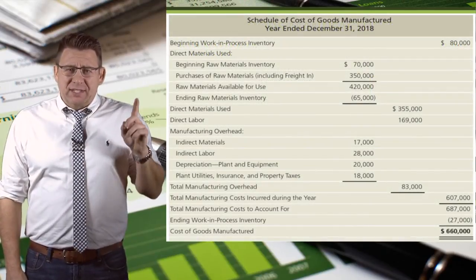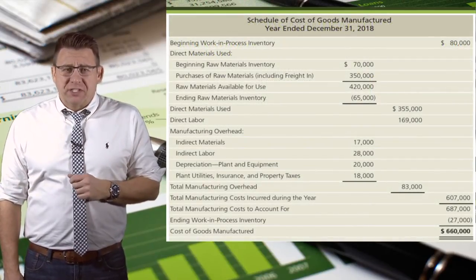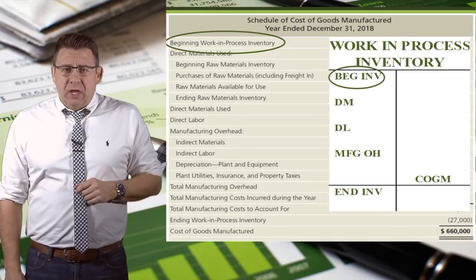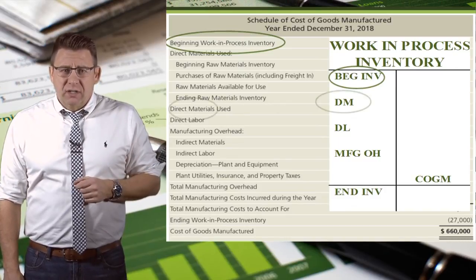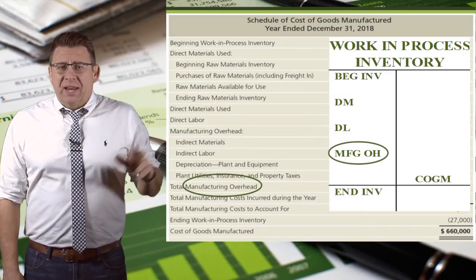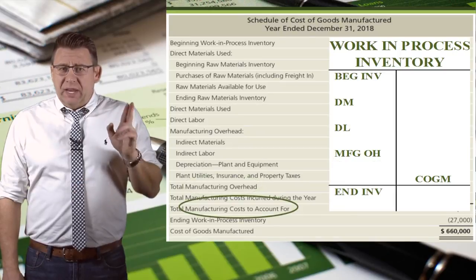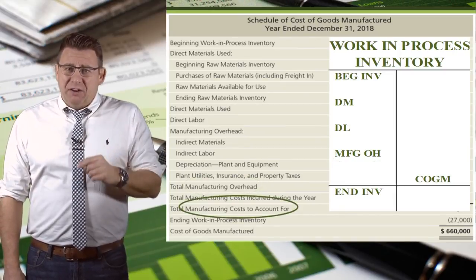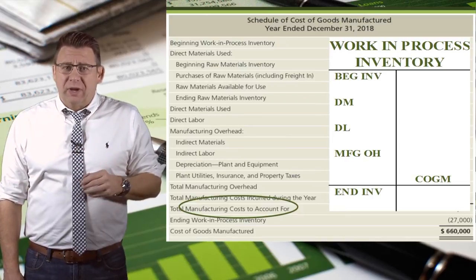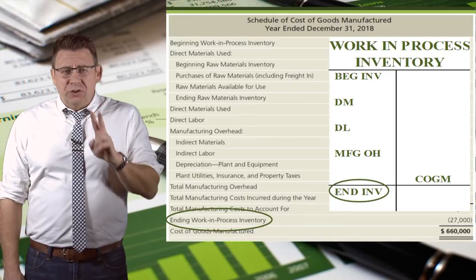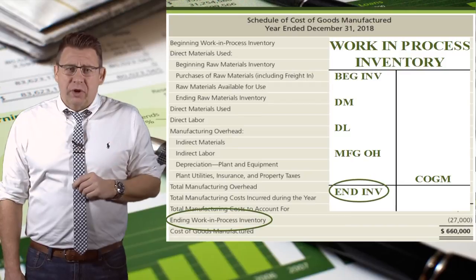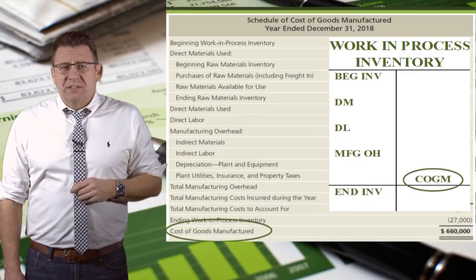Let's revisit that schedule of cost of goods manufactured. Here you can see the main headings, like beginning work in process inventory — that's just the same as the T account. Then we add direct materials, direct labor, and manufacturing overhead. So beginning inventory plus our added manufacturing costs equal the manufacturing costs we need to account for. Since there are only two things that can happen to these costs, we subtract ending inventory to arrive at our cost of goods manufactured.